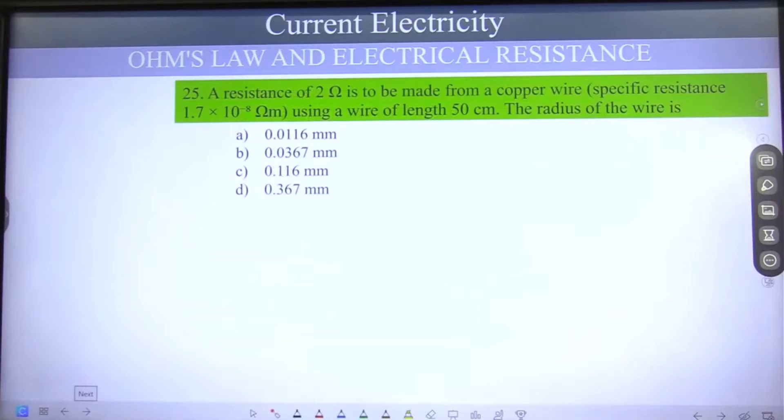Next, a resistance of 2 ohm is to be made from a copper wire using the length 50 cm. The radius of the wire is to be found.